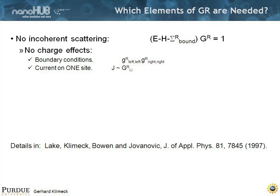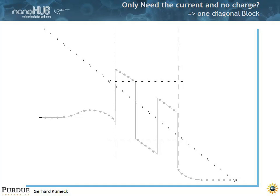What is it you really need? Let's assume that you don't do incoherent scattering and you don't have charge effects. You don't care about charge. You just do a Thomas Fermi calculation for the charge and all you want is get the current. And the details are, by the way, here in this publication. What you really need is one diagonal block of this inverse. You don't need the full inverse.